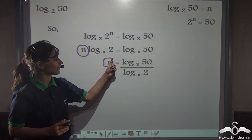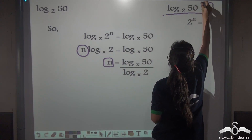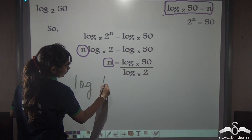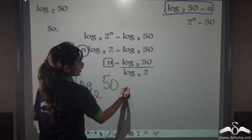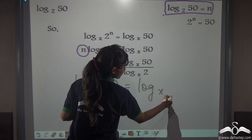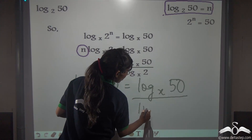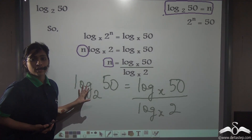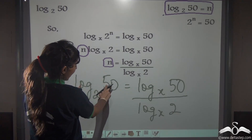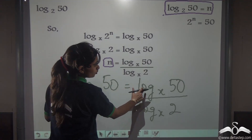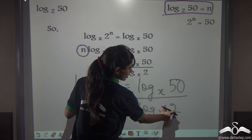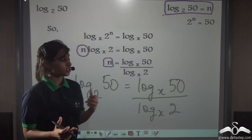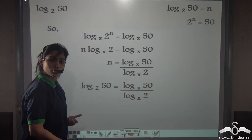Now remember, what had we taken? n was actually log 50 to the base 2. So substituting, log 50 to the base 2 is equal to log 50 to the base x by log a to the base x. This is how the base changing formula comes from. So: log m to the base a is equal to log m to the base b by log a to the base b. The base b or x here is the base which you want to change to. This is proved.